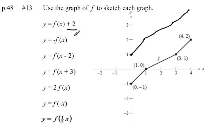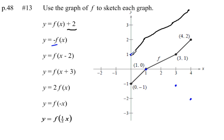Our second graph — we'll do this one in blue — y equals negative f of x. The key is that negative in front of our function, which gives us a vertical flip. We're going to flip our original function across the x-axis. Any point below the x-axis is now above it, any point on the x-axis stays the same, and any point above the x-axis is now below. We can connect those points to get a sketch of our new function.